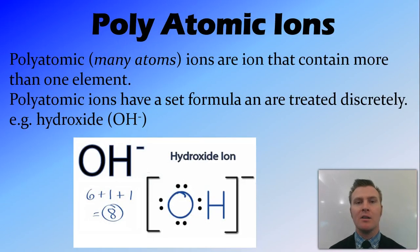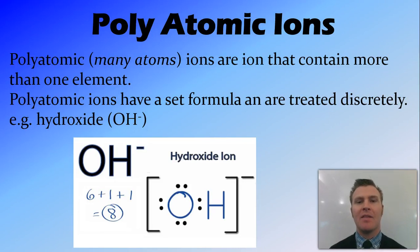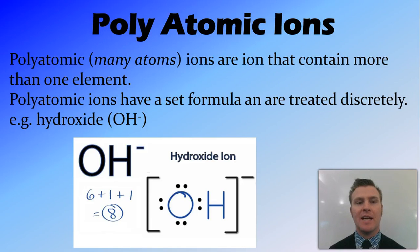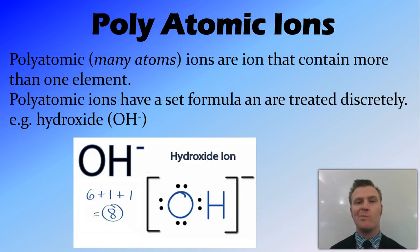Polyatomic ions — polyatomic meaning many atoms — are ions that contain more than one element. They have a set formula, and we treat them as one entity: they don't split up in reactions; they always move together. An example of a polyatomic ion is the hydroxide ion. A hydroxide ion is an oxygen and a hydrogen, and it has a negative valency of minus one.